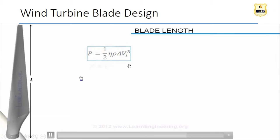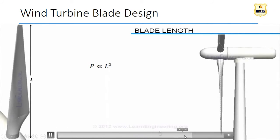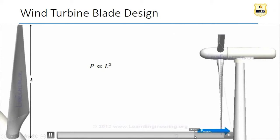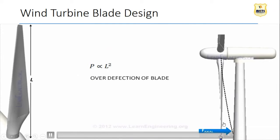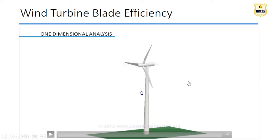Power equals efficiency times ρAV³. Power is directly proportional to the square of the blade length. The overall deflection of the blade is also a design parameter - the blade should not deflect at an angle that could damage the hub. So blade deflection should be calculated as a design parameter before installation.